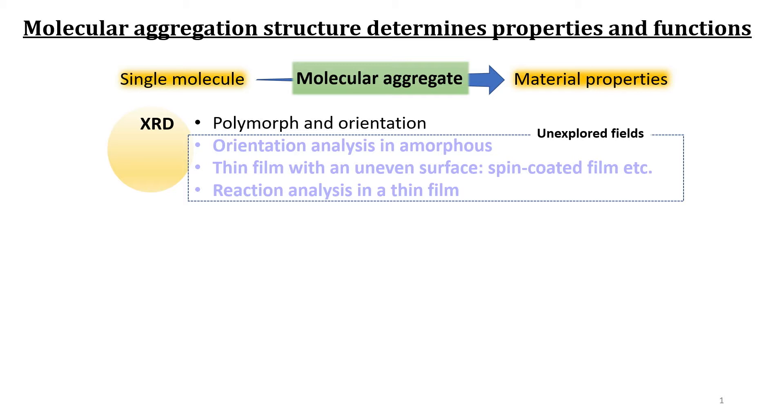Reaction analysis in thin film is another big matter because the peak intensity depends on both quantity of chemical species and the molecular orientations. In this manner, analysis of a thin film has long been a very difficult matter.